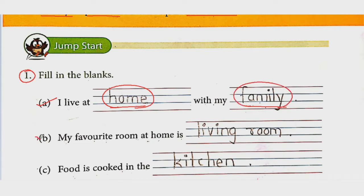See the second blank: 'My favorite room at home is blank.' Aapki home mein kaunsi room favorite hai? Kaunsa kamra aapko sabse zyada pasand hai? Woha aapko yahaan pe likhna hai. My favorite room is the living room, kyunki wahan TV hota hai. So I write here: living room. Aapki jo favorite room hai woha aap yahaan pe likh sakti hain.